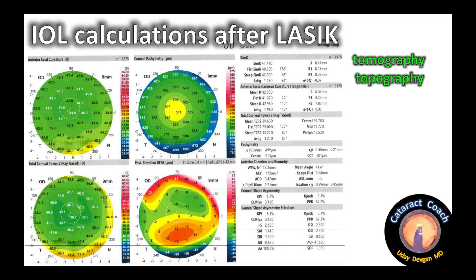Next we have a printout from a dual Scheimpflug tomographer, which also has a topography component but importantly takes many slices through the cornea and pieces together a 3D map. Looking at the four pictures on the left: the top left is the anterior axial curvature, similar to the previous test. The bottom left corner is the total corneal power via ray tracing — notice how the central corneal power is a little bit less with ray tracing. The white ring shown there indicates the centration of the pupil.